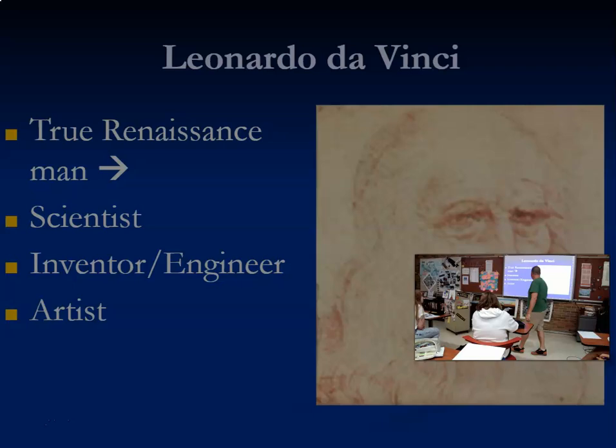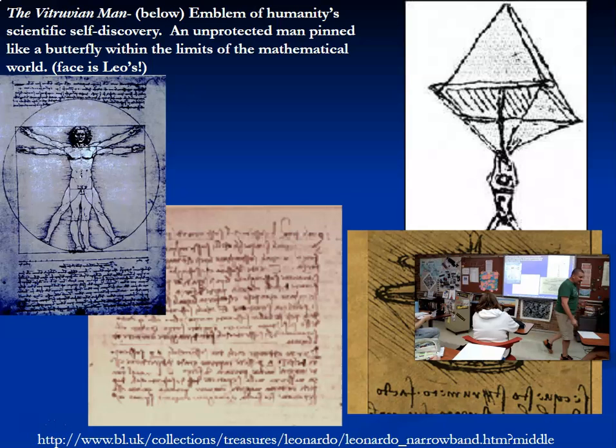He kept a notebook where he did a lot of these designs — that's what the Da Vinci tank was. He actually wrote it in mirror image because he was left-handed, and he wrote in mirror image so nobody could steal his ideas.